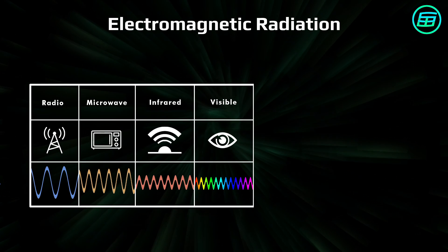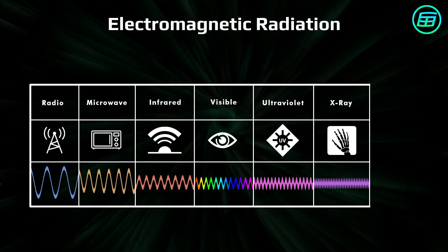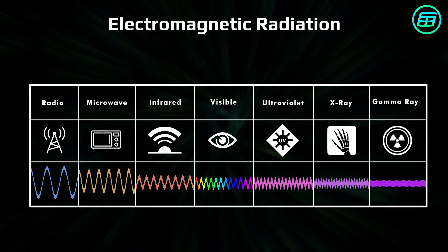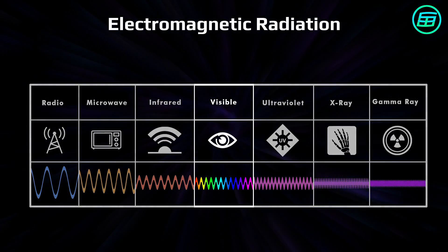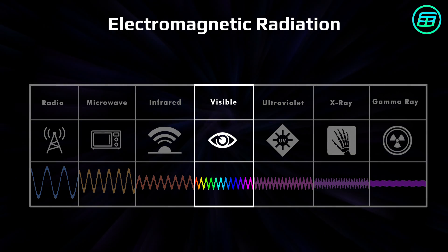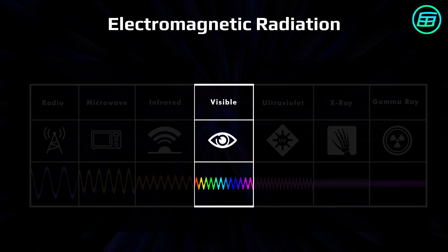infrared, visible light, ultraviolet, x-rays, and gamma rays. We can see just a small part of this electromagnetic spectrum due to cells in our eyes that perceive only visible light.